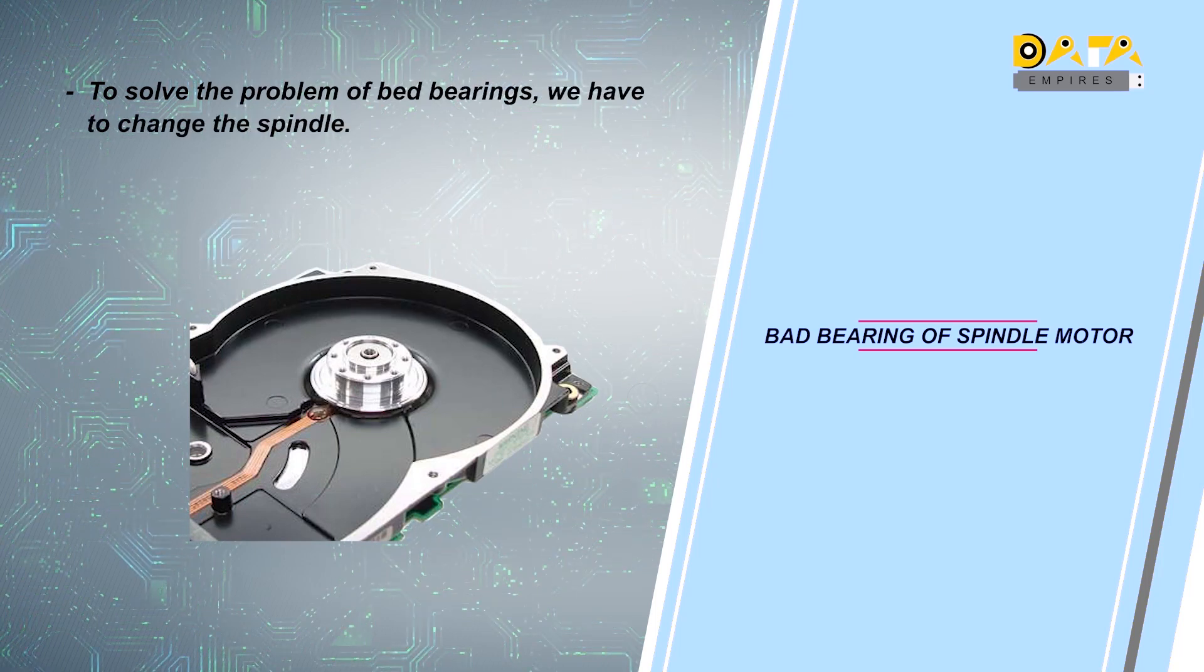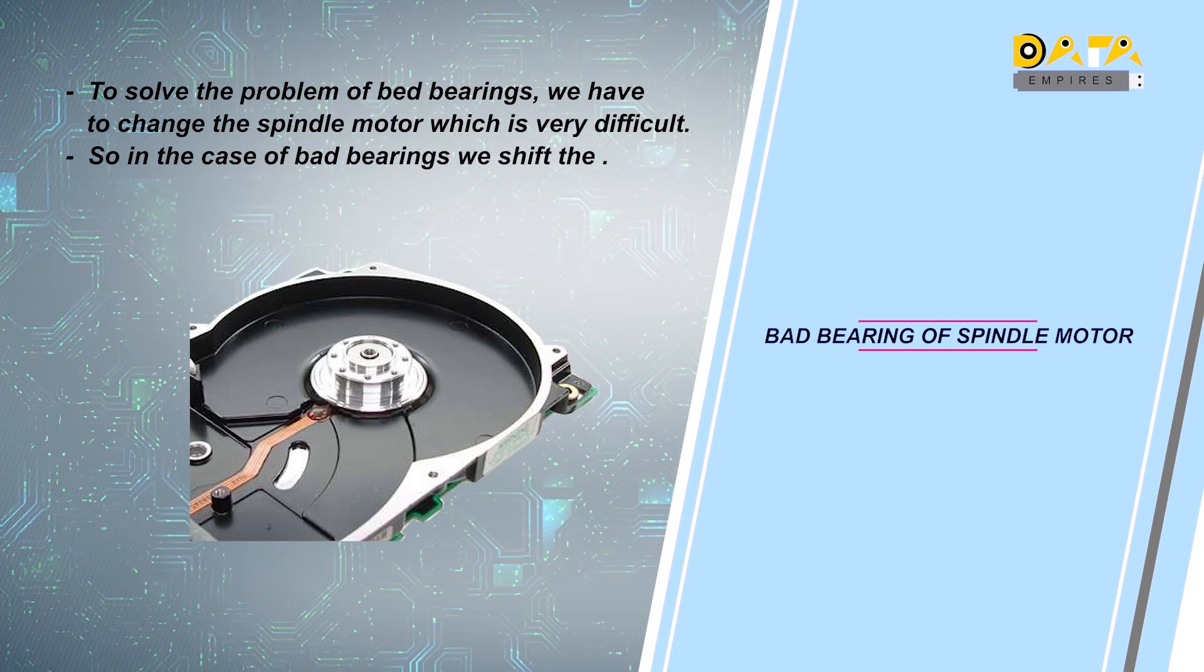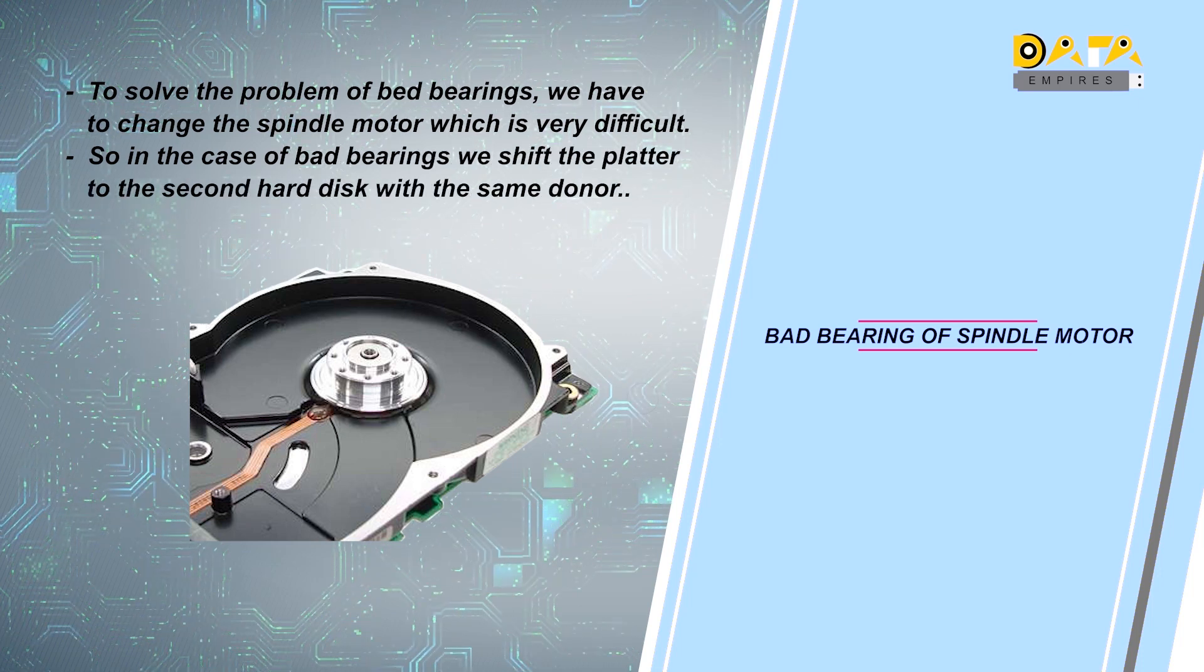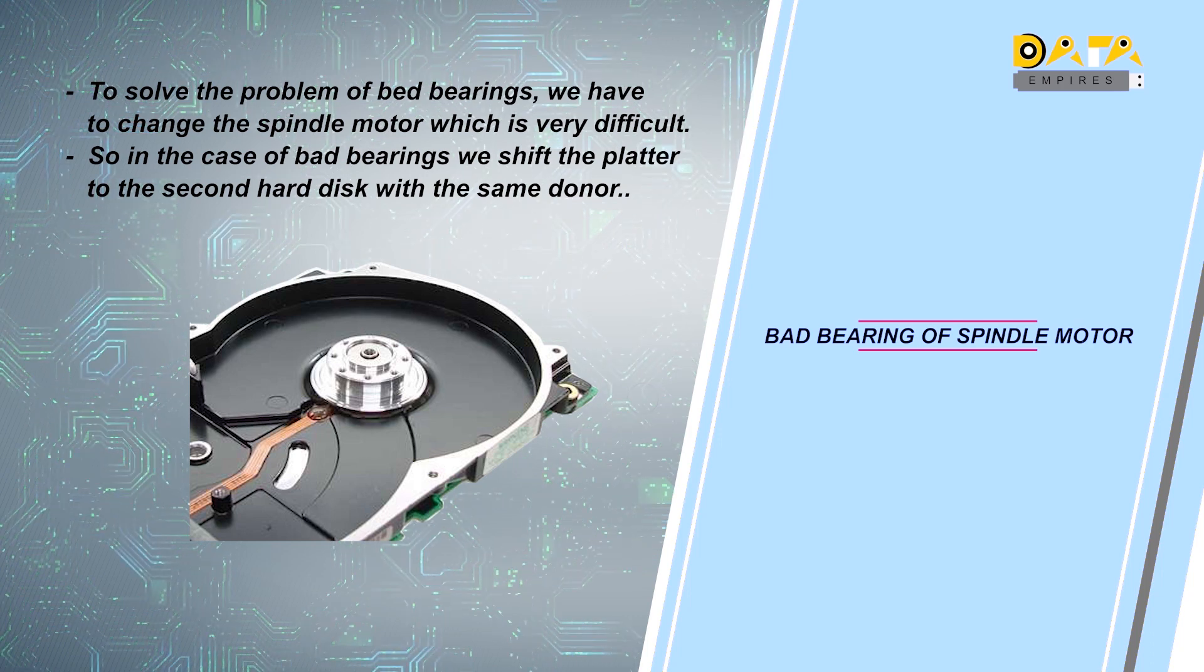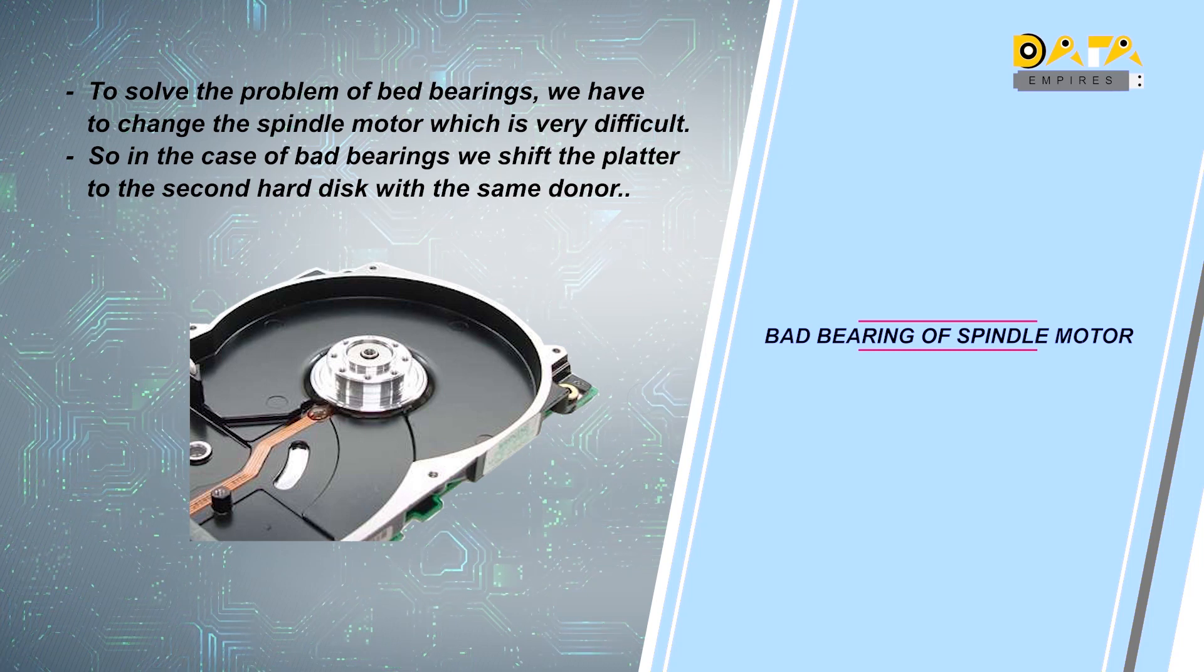To solve the bad bearing problem, we need to change the spindle motor, which is a very difficult task. So, for the bad bearing, we will transfer the platter to the second hard disk with the same donor. This requires special tools like platter exchanger and head replacement tool.